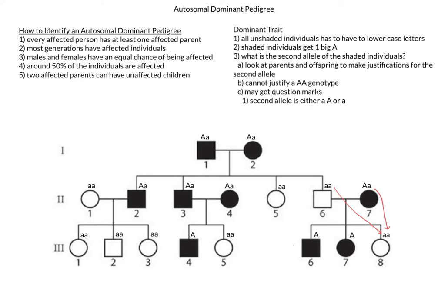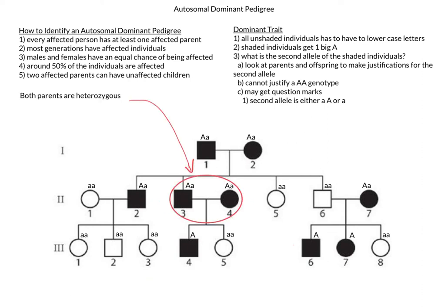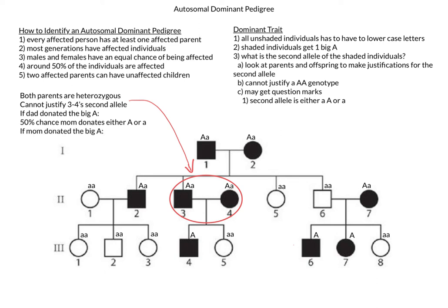That gets us into the third generation. Let's start with individual 3-4. Here we have parental information but no offspring information. Since both parents are heterozygous, we cannot truly justify a second allele for individual 3-4. We know that individual 3-4 has at least one big A. If he received that from dad, then mom would have a 50% chance of giving either a big A or a small a. Similarly, if mom donated the big A, then dad would have a 50% chance of giving either a big A or a small a. As such, we cannot truly justify the second allele, and individual 3-4 will have to be big A question mark.